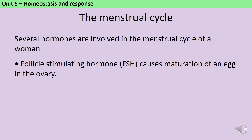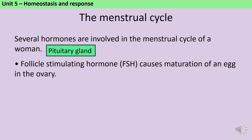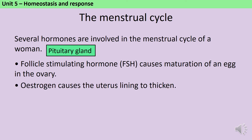FSH is produced by the pituitary gland in the brain. Another one of FSH's jobs is that it stimulates the production of oestrogen, which is the second hormone, and what oestrogen does is it causes the lining of the uterus to build up, so that if an egg is fertilised, it has a suitable surface to become implanted in. Oestrogen is produced in the ovaries.